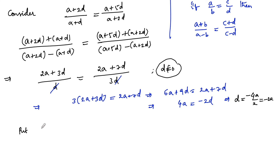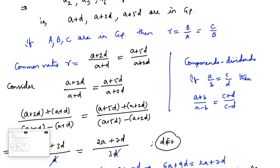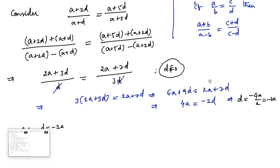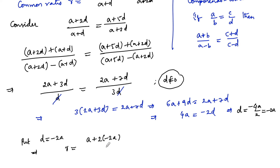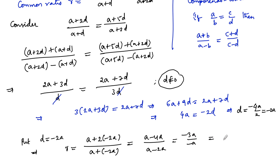Substituting d = −2a into the ratio expression: r = (a + 2d)/(a + d) = (a + 2(−2a))/(a + (−2a)) = (a − 4a)/(a − 2a) = (−3a)/(−a) = 3. Therefore the common ratio r = 3.